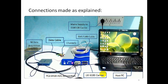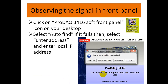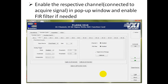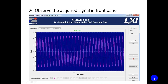This is the main connection setup. To see the result on the front panel, click on the PRODAC3416 soft front panel icon on the desktop. A dialog box appears — click Auto Find. Once the 3416 function card is selected, choose the channel to which you have given the generated signal, then enable that particular channel and the FIR filter. Calibrate the channels and click Run to see the output waveforms. This is how the output waveform looks.